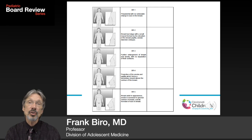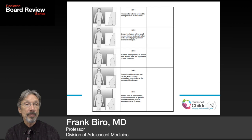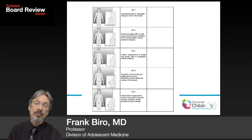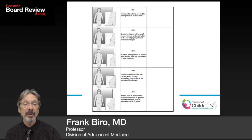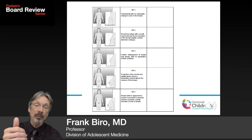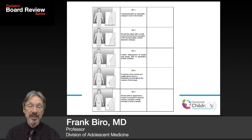For girls, the same pubic hair staging system applies, plus a breast staging system. Breast stage 1 is no palpable breast tissue. Breast stage 2 is the breast bud — a firmer tissue within the adipose, with an enlarged areola. Breast stage 3 shows further breast enlargement with no separation of the areola contour. Breast stage 4 shows the areola and papilla projecting as a secondary mound above the breast silhouette.